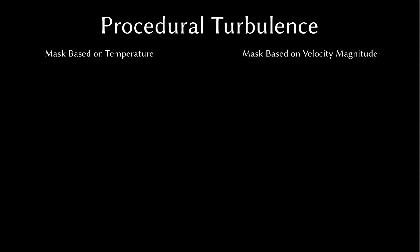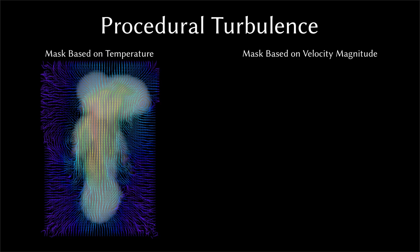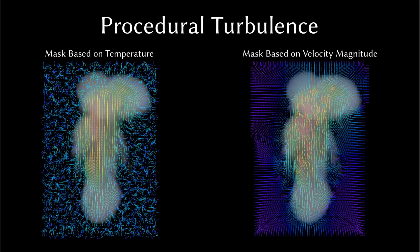It is also possible to inject turbulence into the simulation using two masks. One based on the temperature to keep the turbulence outside the renderable volume, and the other derived from the velocity magnitude to add more turbulence to fast-moving regions of the fluid. Our solver also supports vorticity confinement, which can be used to boost the rotational component of the velocity field.